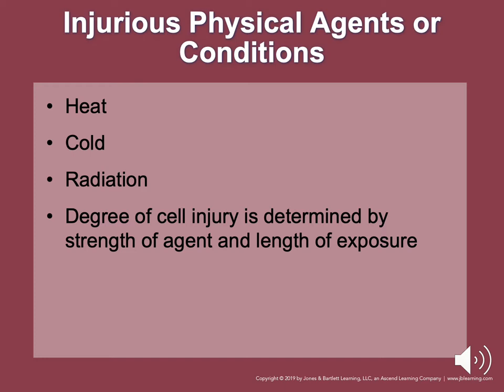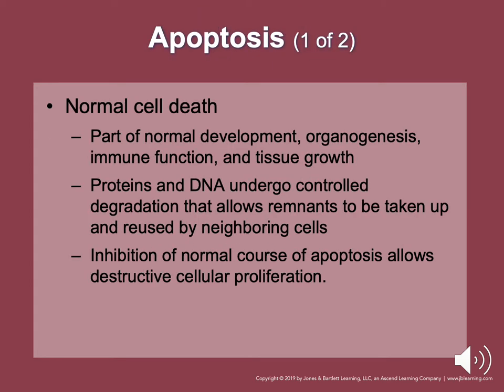Apoptosis is normal cell death. It is part of development, immune function, and tissue growth — genetically programmed into the cell as part of normal development. Proteins and DNA undergo controlled degradation, allowing their remnants to be taken up and reused by neighboring cells. These areas do not show evidence of inflammation. Inhibition of normal apoptosis allows destructive cellular proliferation to occur.